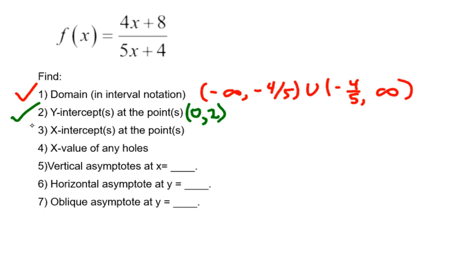Moving right along, we're going to look at number 3, finding the x-intercepts. So x-intercepts happen where the y-value is 0, because we're on the x-axis. We haven't gone up or down. So we're going to set the whole function equal to 0 and solve for x.